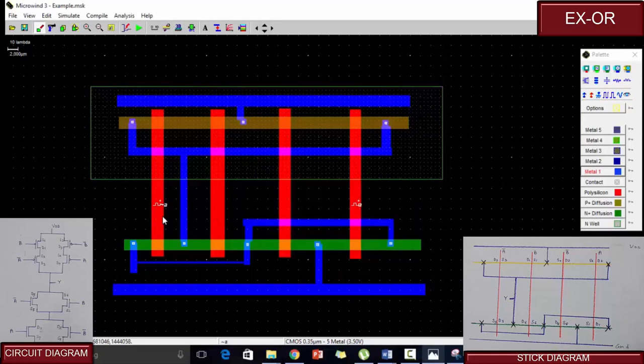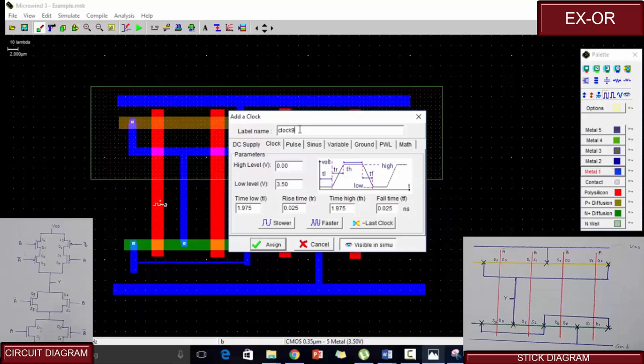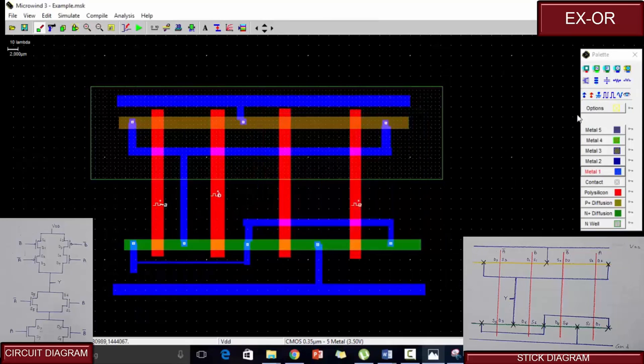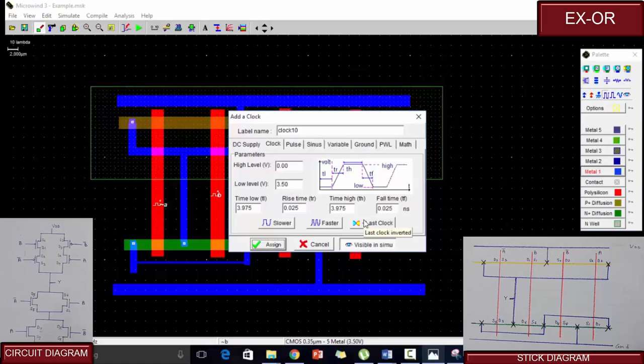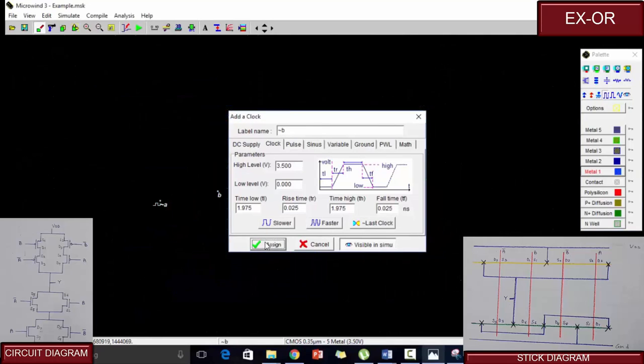Now from the stick diagram, we can see that this is B and this is B bar. Same negation to this polysilicon can be given. Let us give the clocks. This would be B, and this would be B bar, negation of the last clock. Assign.